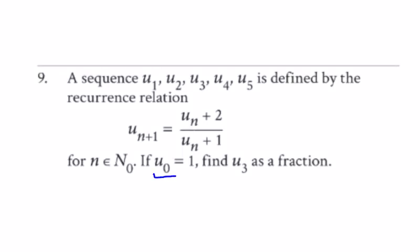Number 9, we're given u0 is 1, so we'll have u0 here. So to get u1 when n equals 0, u1 is equal to u0 plus 2 over u0 plus 1, which is equal to 1 plus 2 over 1 plus 1, which is 3 over 2.